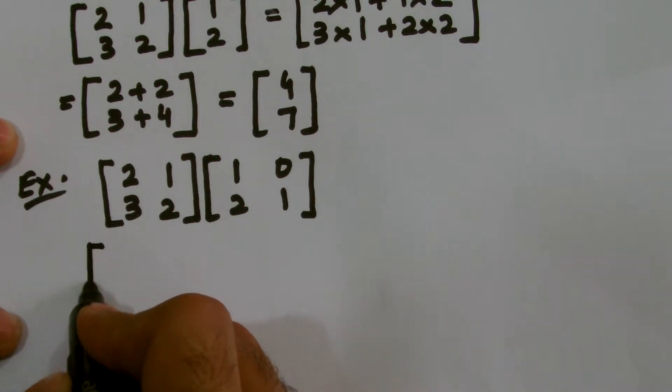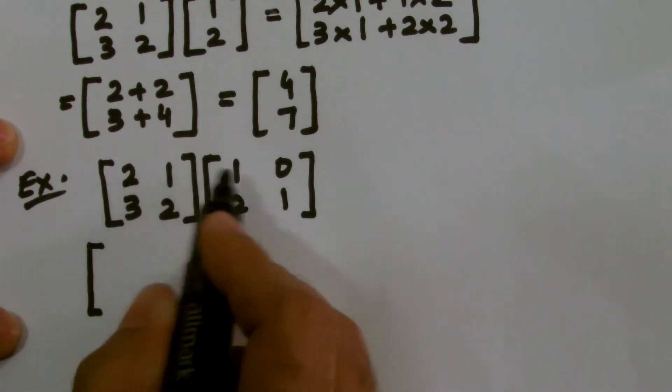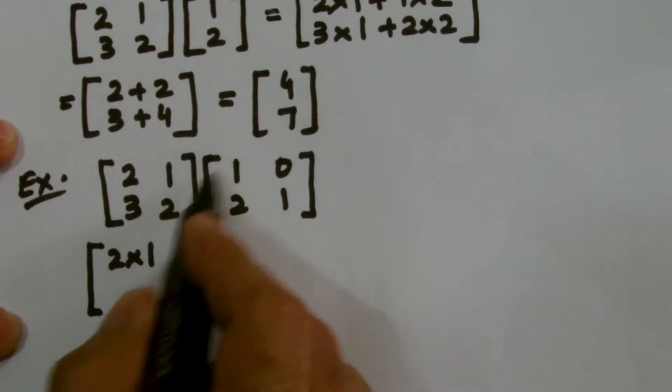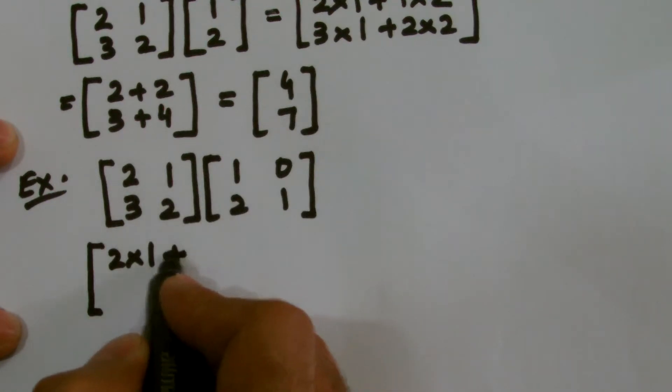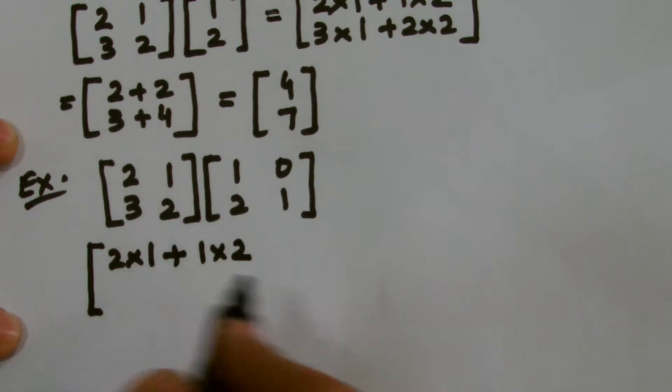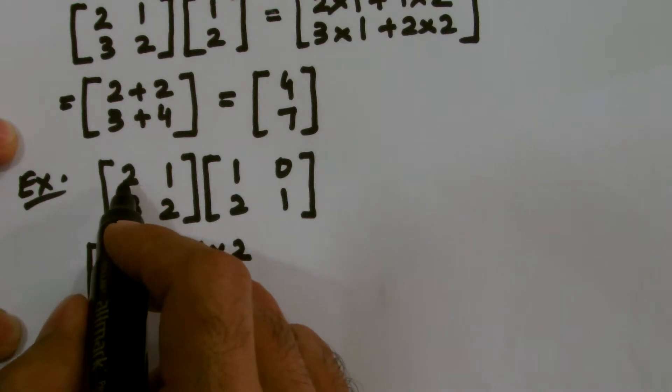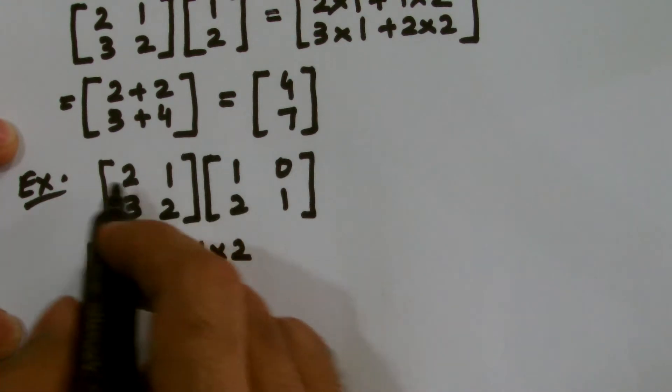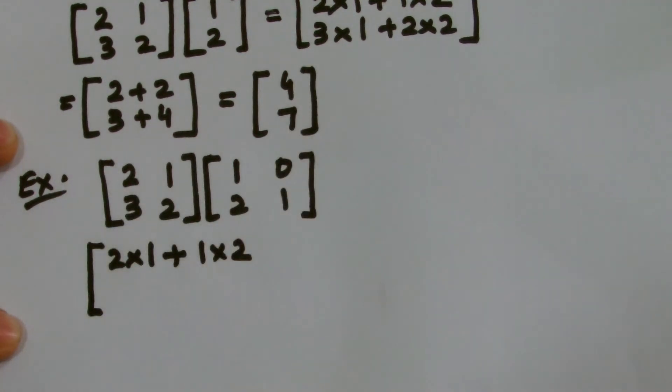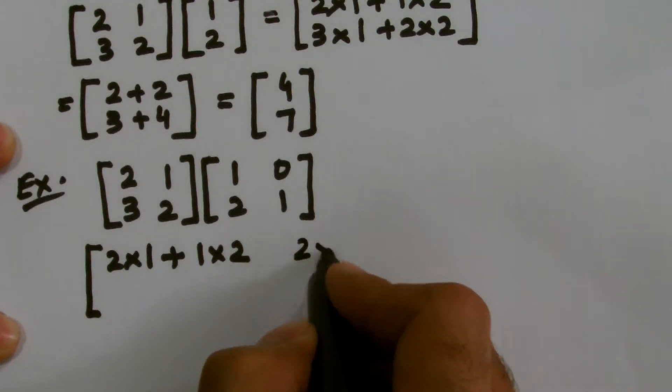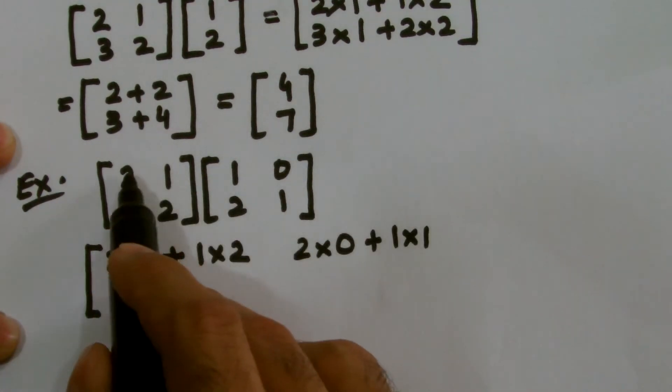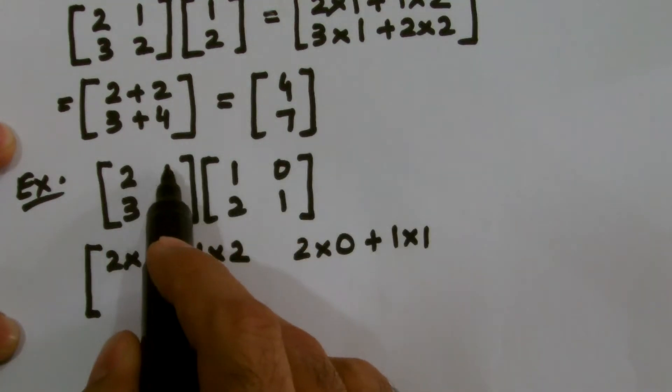How do we multiply? This is again a simple case, 2 multiplied by 1, it is again the repetition of the previous case, 2 multiplied by 1, plus 1 into 2. Similarly, now I will multiply this first row, as I have multiplied first row with the first column, I will now multiply the first row with the second column. So I get 2 multiplied by 0, plus 1 multiplied by 1, I multiply this 2 with this 0, I multiply this 1 with this 1.